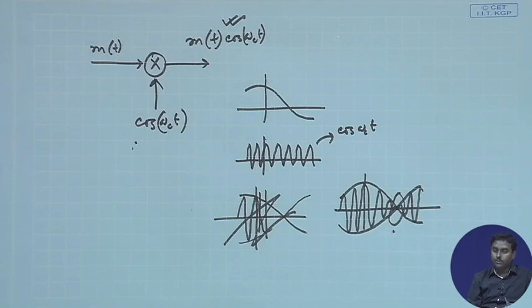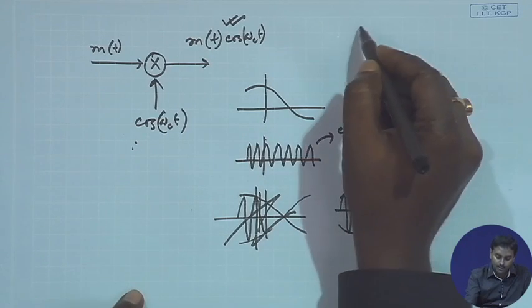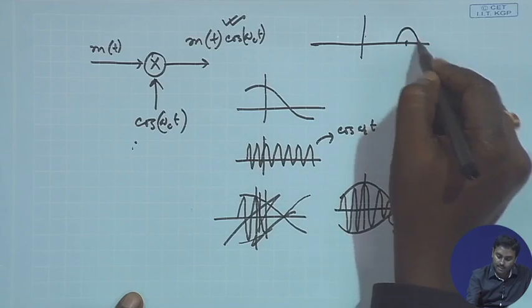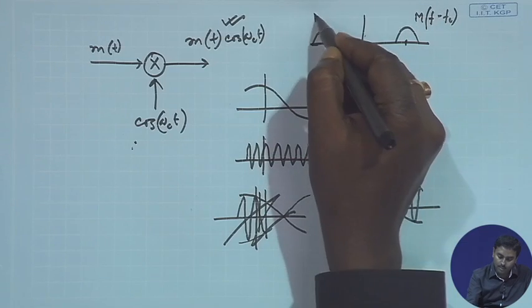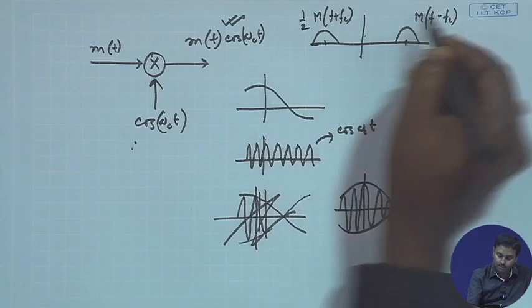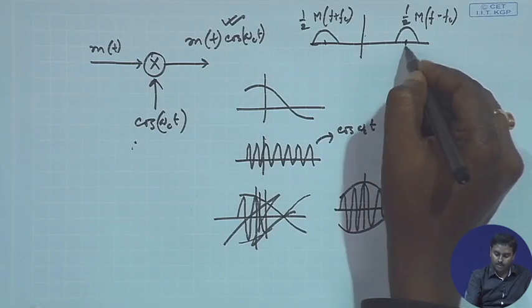In the last class, we were describing DSB-SC, the simplest form of amplitude modulation, where we just multiply a signal m(t) with cos(ωc·t). We showed the frequency domain response: it is centered around fc, with components M(f − fc) and M(f + fc), each scaled by one half.